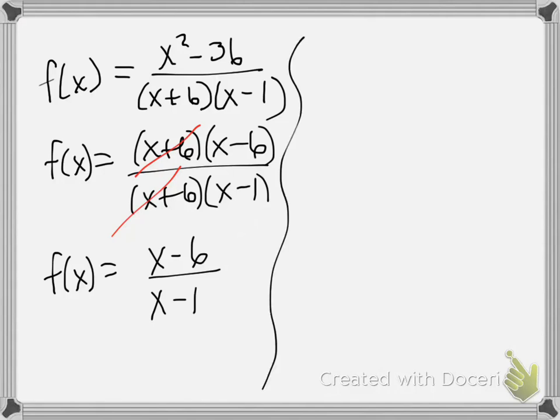But I want to find my vertical asymptotes. Well, again, you know from the lecture to take your denominators, set them equal to 0, and solve for x. So I take x plus 6, set it equal to 0, and I get x equals negative 6. And I take x minus 1, set it equal to 0, and solve for x, and I get x equals 1.